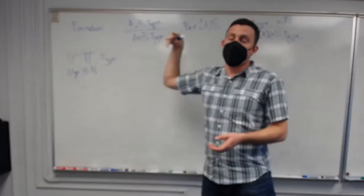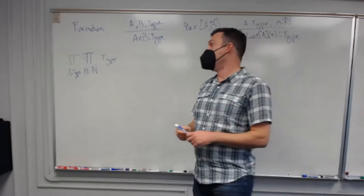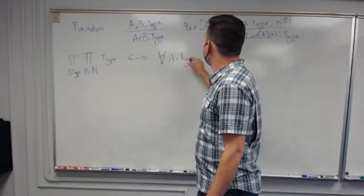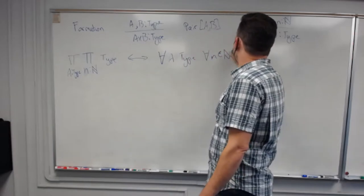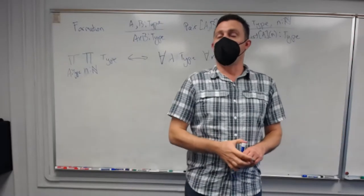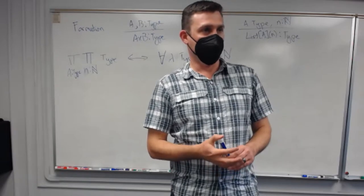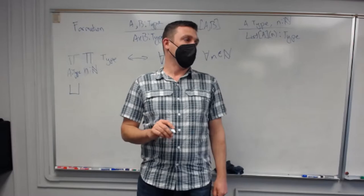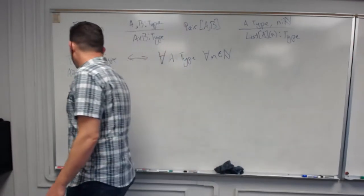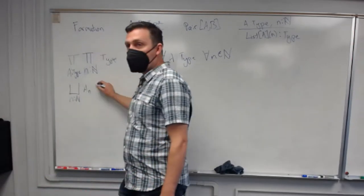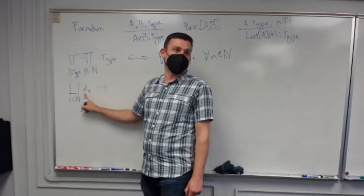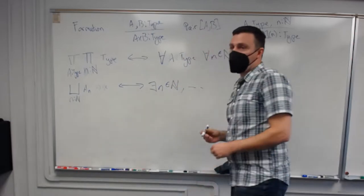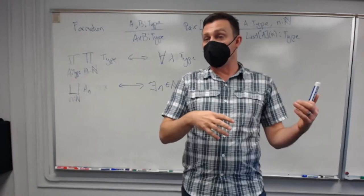Tuples are the way to open the door to this kind of construction, and it lets us write a very strong version of logic with things like 'for all'. Last week, Sean described this as for all: you can say 'for all type A' and 'for all N in N' - that's the logical interpretation of having a product type. The sum type, or disjoint union, captures 'there exists.'